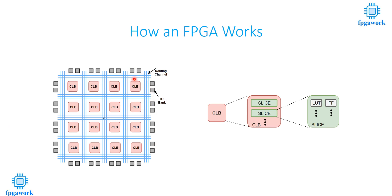An FPGA has basically three components: CLB (configurable logic block), routing channels, and I/O banks. Any kind of logic in an FPGA can be implemented by exploiting CLBs. CLBs are connected with each other using wires called routing channels. By making these connections, we can implement any complex function or algorithm using an FPGA. The I/O banks are used to make a communication channel between the external world and the CLBs.